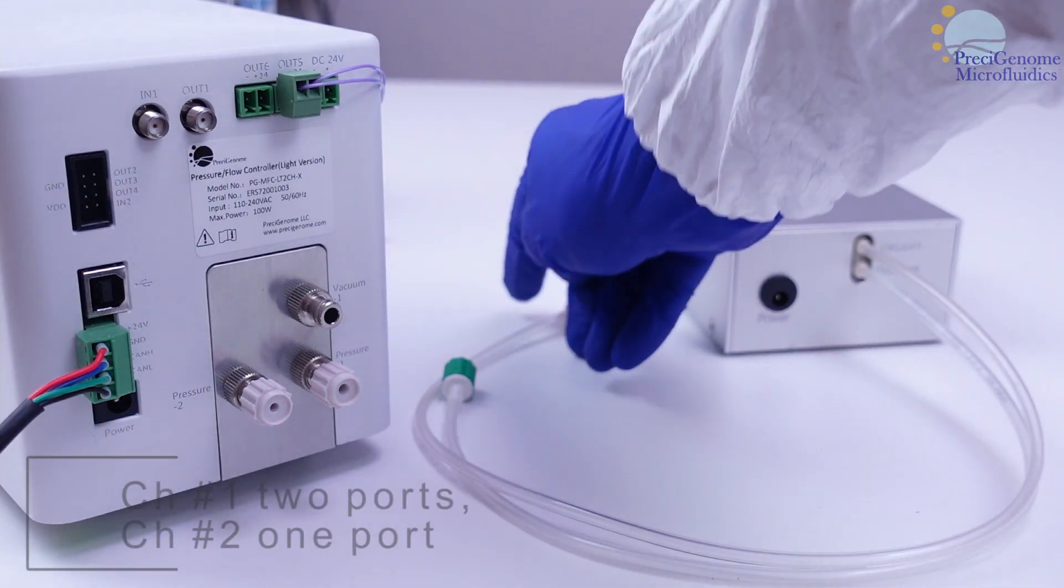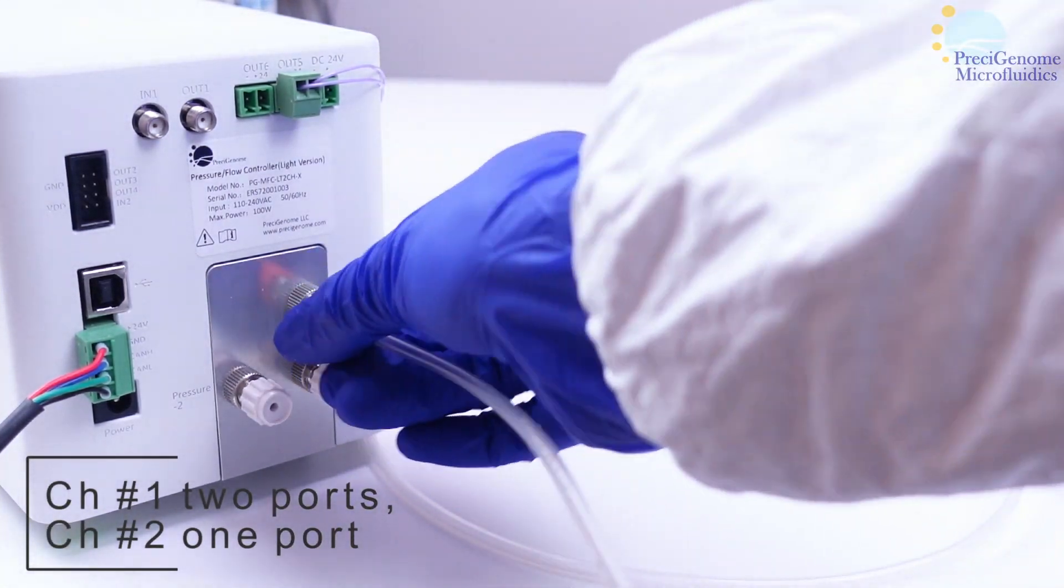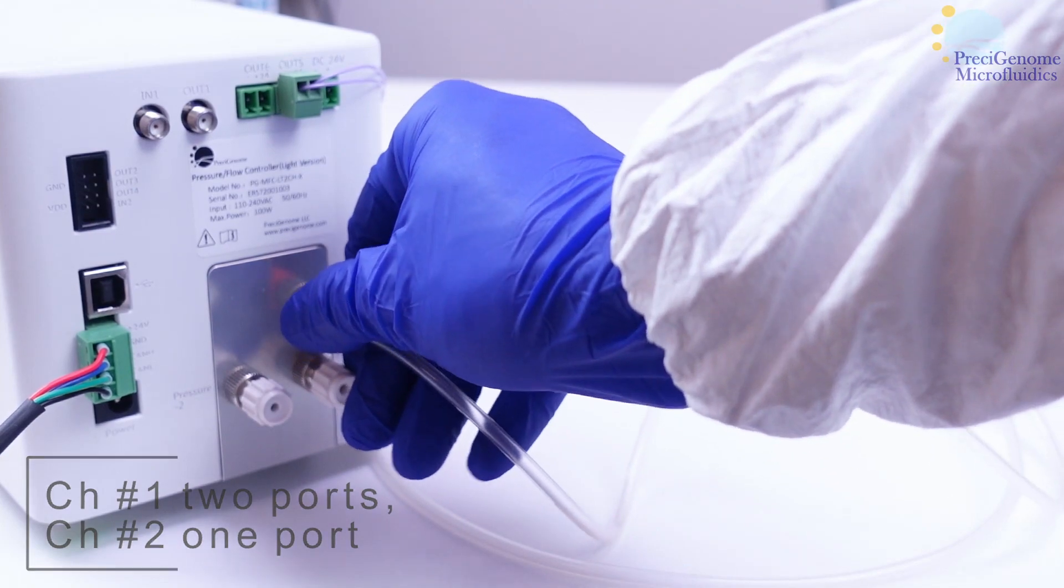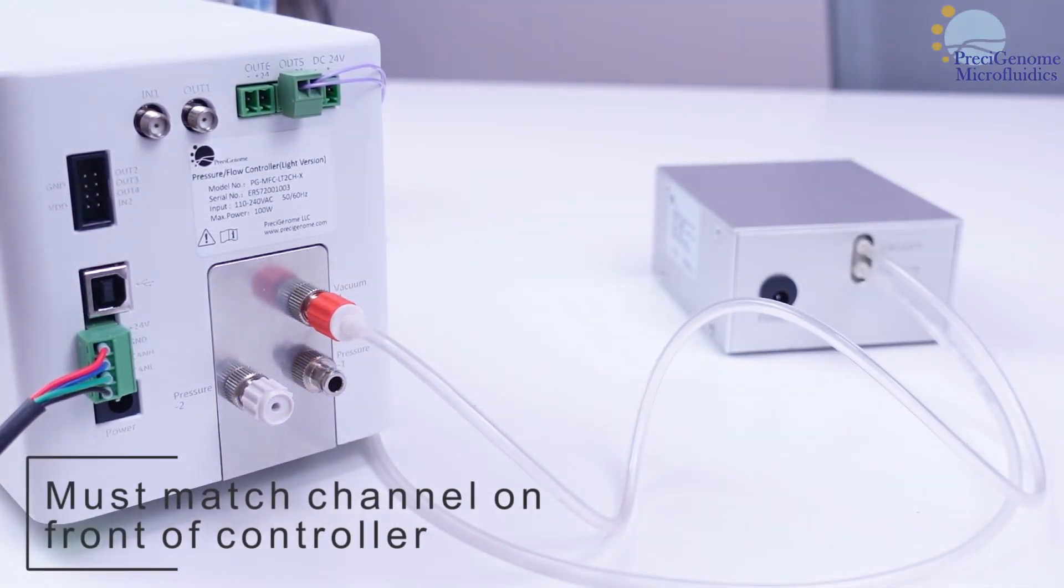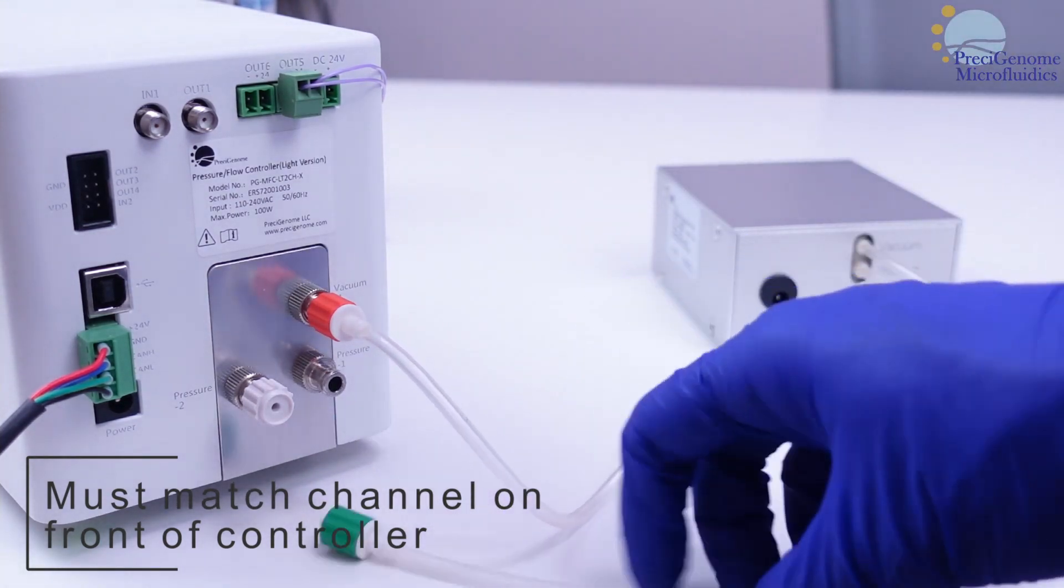While channel 1 has two ports for vacuum and pressure function, channel 2 has one port with pressure function only. In either case, make sure to connect the pump to the same channel being used in the front.